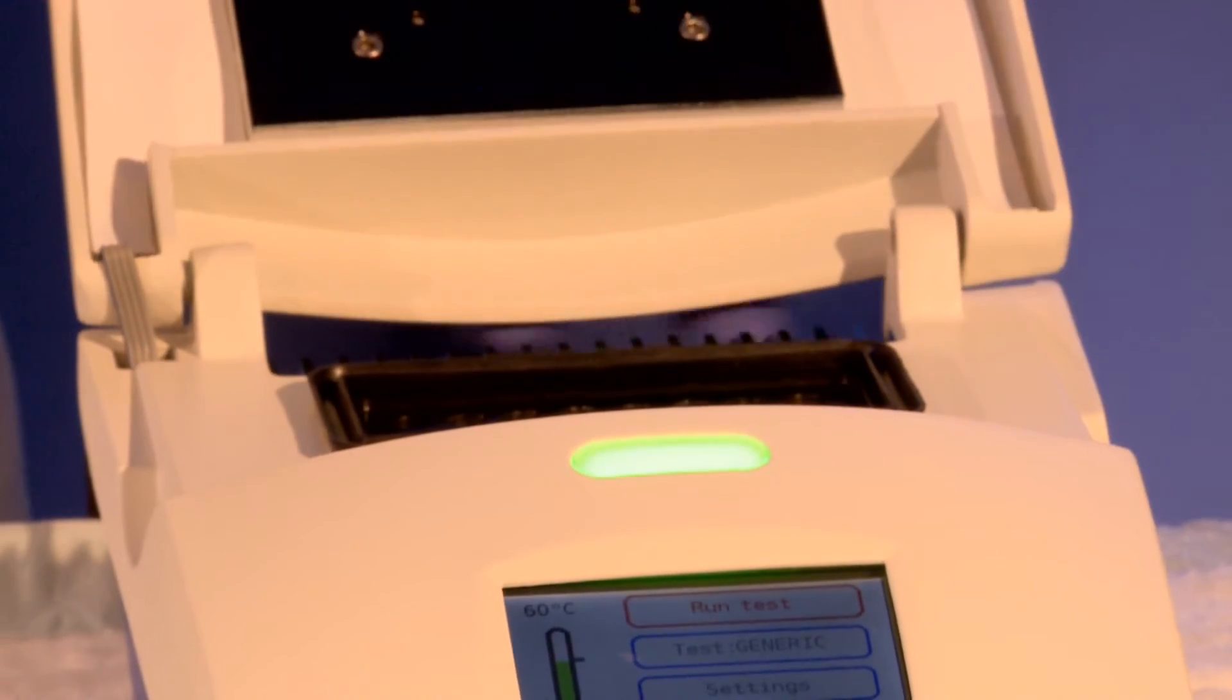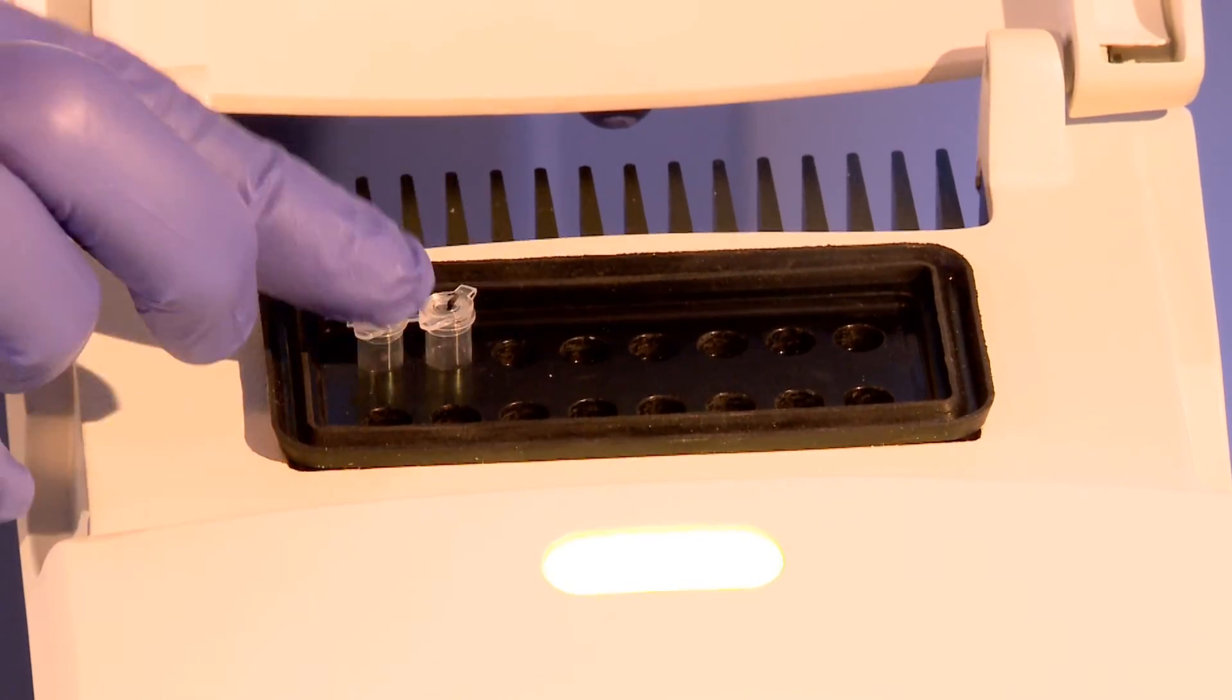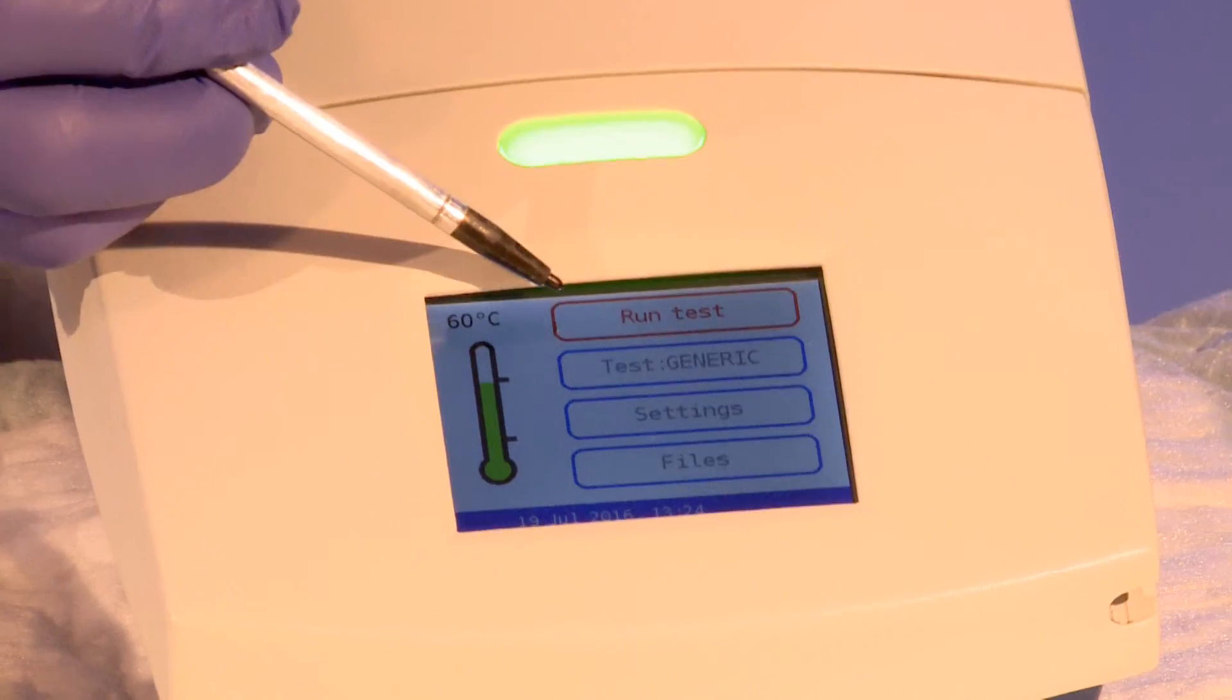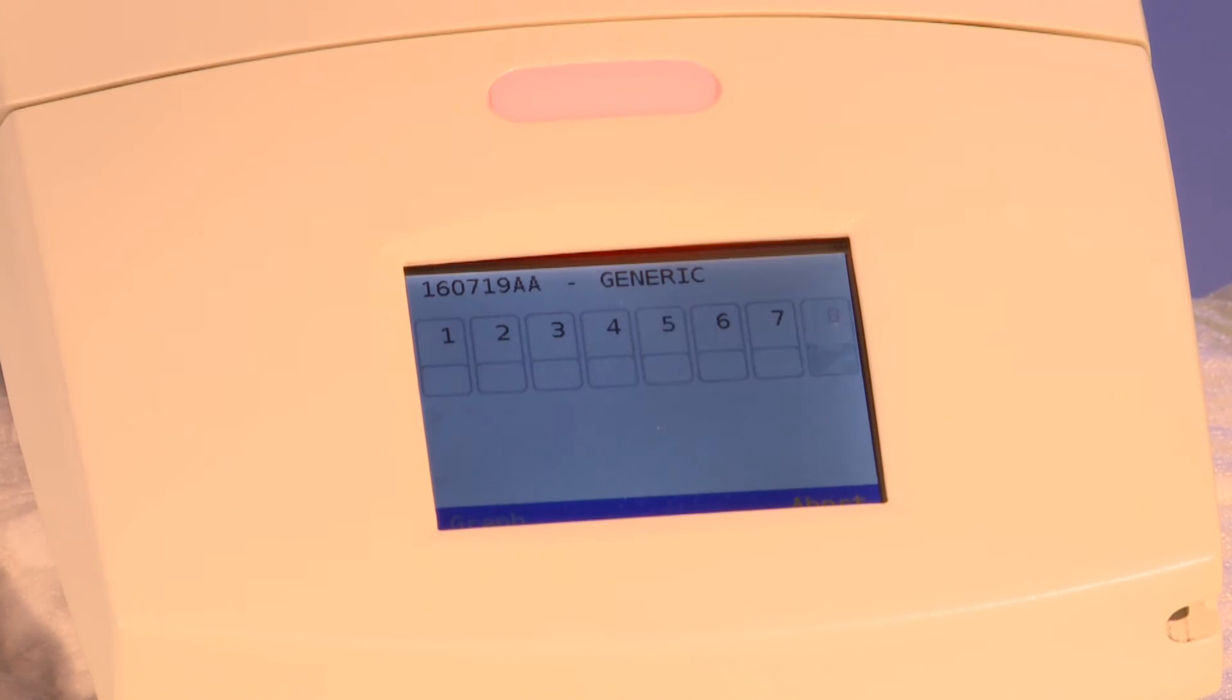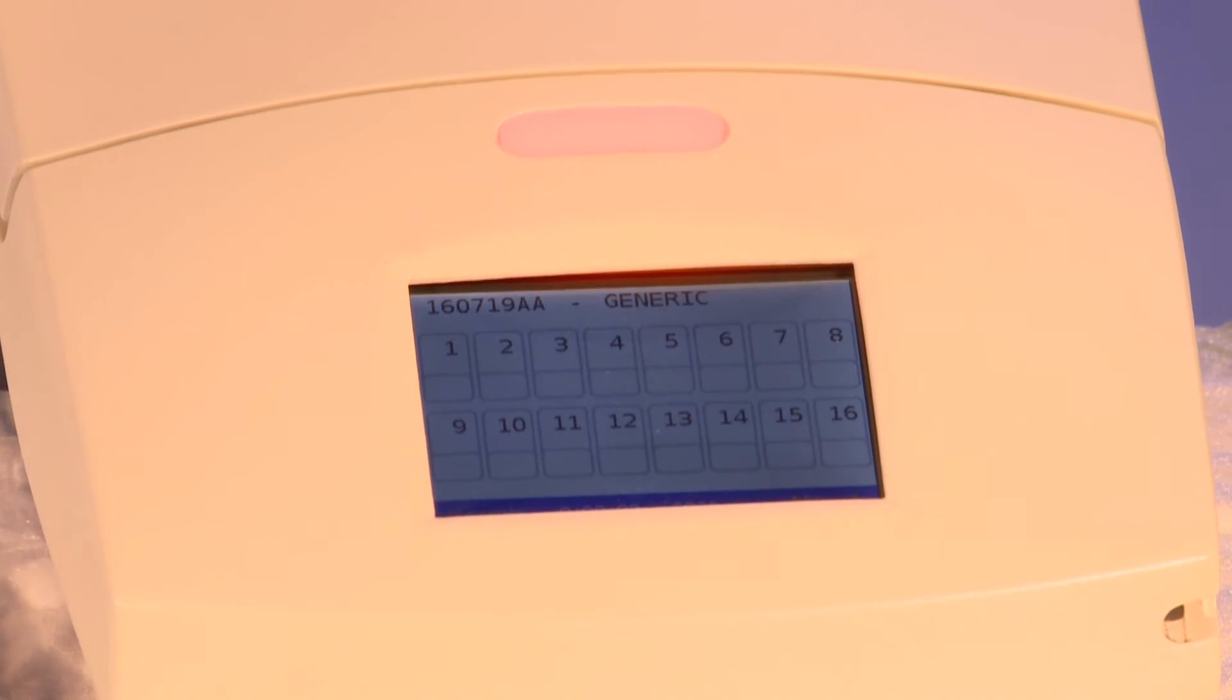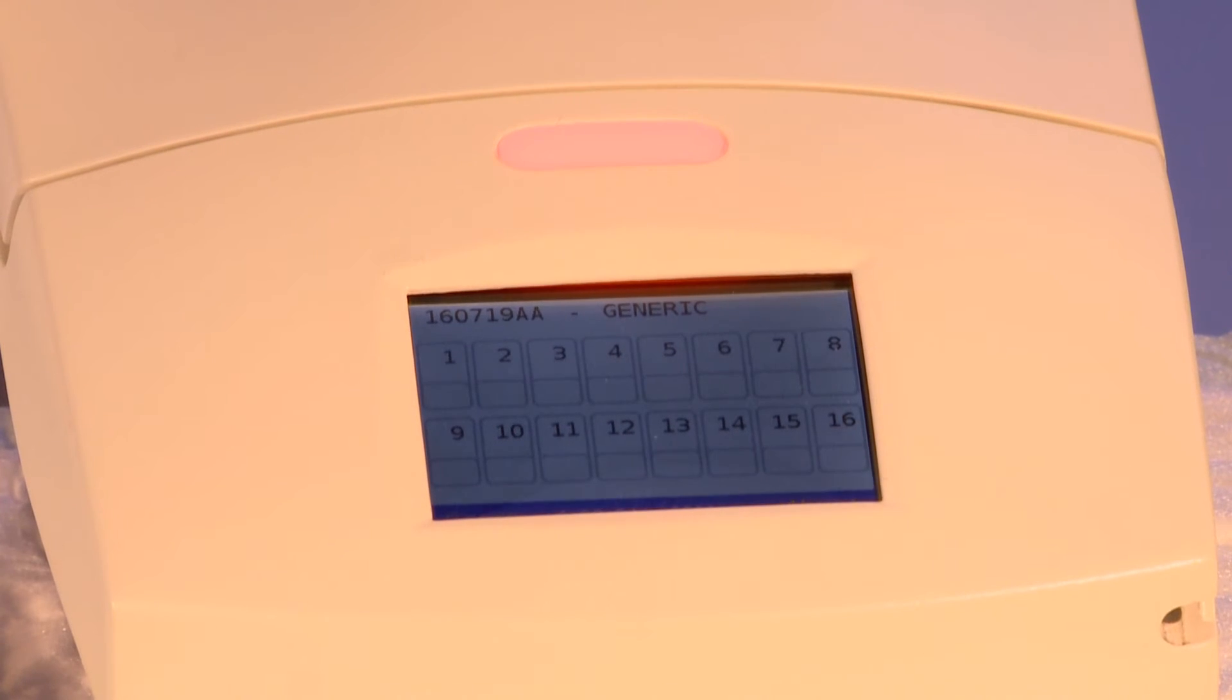Open the lid and load the prepared PC Run Reaction Tubes into the wells. Close the lid completely. Use the stylus to activate the Run Test message. The indicator light will turn red and a diagram of 16 tabs will appear on the touch screen. Each tab represents a single reaction well.